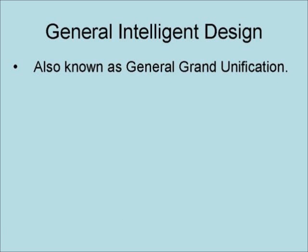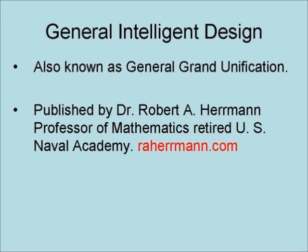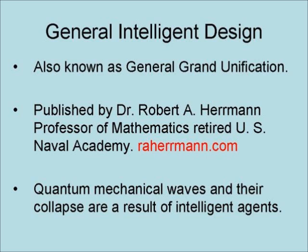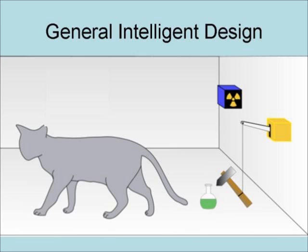Our final interpretation of quantum mechanics is called General Intelligence Design, also known as General Grand Unification. It was published by Dr. Robert Herman, Professor of Mathematics, retired U.S. Naval Academy. This interpretation fits well with the Christian worldview because the idea of an intelligence controlling the universe at its fundamental level fits well with God as described in the Bible. In the case of Schrödinger's cat, the cat is alive until the controlling intelligent agent decides to cause a decay event to take place.